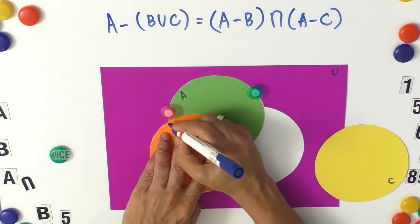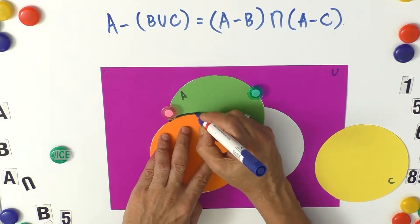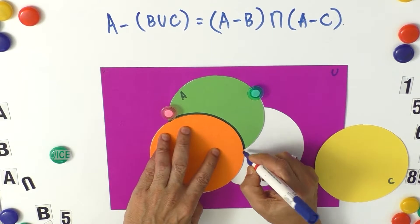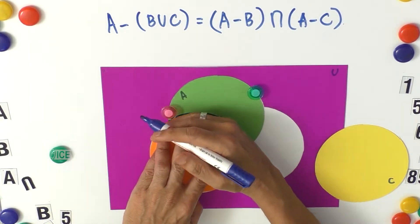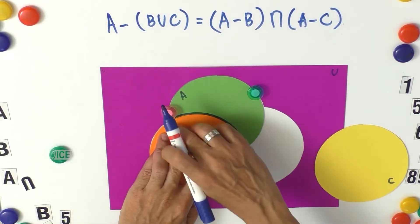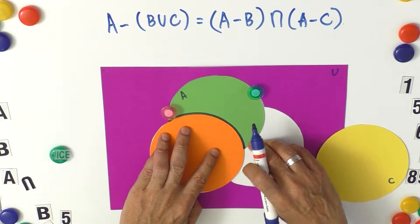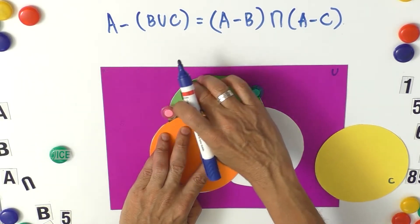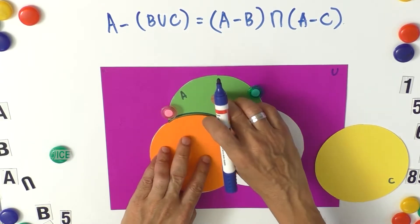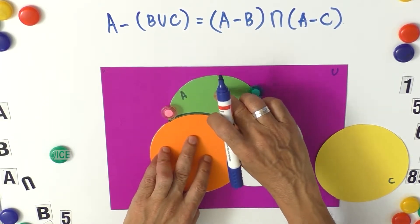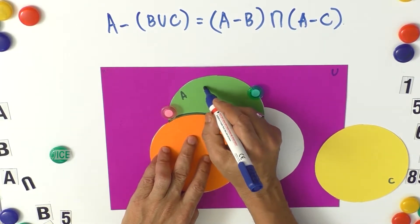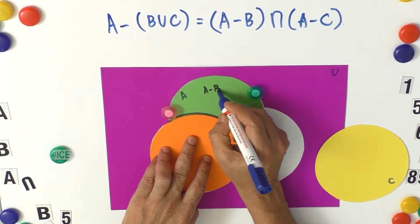What is A minus B? A minus B is a portion which is above the B. The objects of A here which are not in B is A minus B. So this is A minus B.